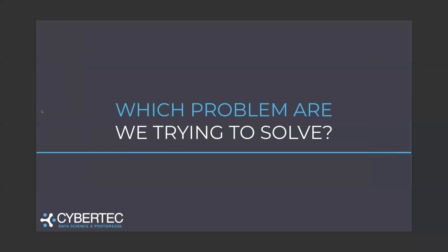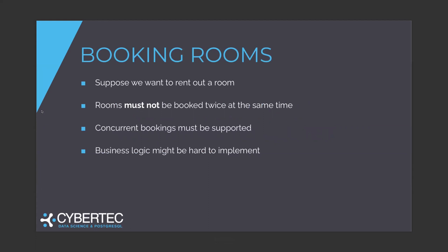So which problem are we trying to solve today? The topic here is something quite common that everybody has done before. Consider the following: we want to book a room. What we want to avoid is that two customers end up in the same room at the same time — basically, that people concurrently book the same room with overlapping periods. A room can only be rented out to one customer at a time; there must not be any overlaps. The problem is that this business logic can be quite hard to implement efficiently and in a scalable way.